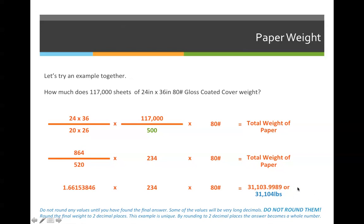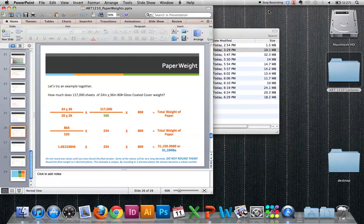So 1.66153846 times 234 times 80 should come out to 31,103.9989 pounds. Once I have this, I can round up to the next pound if I want to. However, for our class, we're going to stick to two decimal places. This is a unique example because when I round 99 to the next decimal, it automatically makes it a whole number. But just because my answer is a whole number doesn't mean that your answer for your homework should be. Always round to two decimal places.